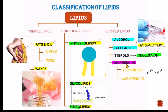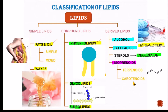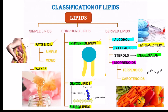Isoprenoids — 'iso' means same and 'prenoid' means a five-carbon chain. If these repeating units join together, we get terpenoids — a long chain formed by joining five-carbon repeating units. Carotenoids are present in yellow, green, and red vegetables and fruits. These are antioxidants that protect us from free radicals in the body.